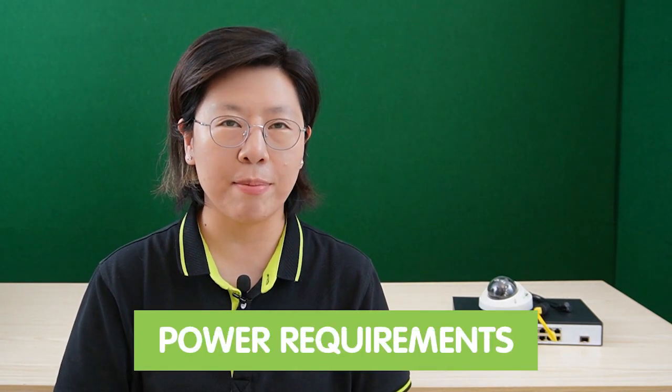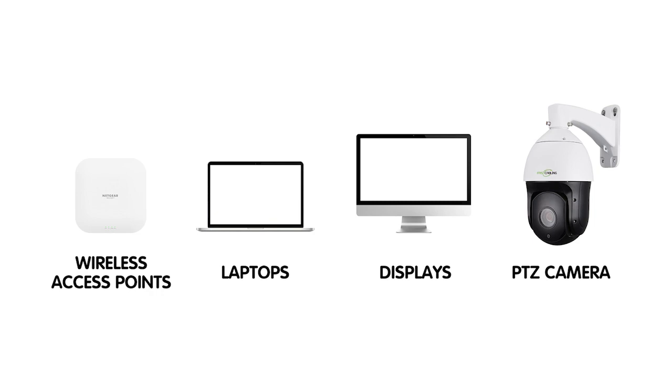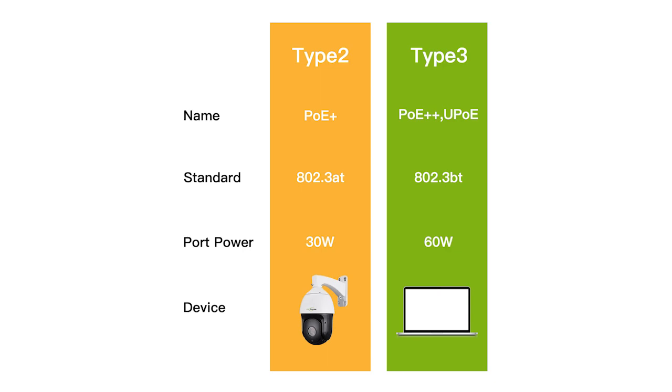PoE technology caters to a wide range of devices, categorized based on their power requirements. Low-power devices like IP cameras, VoIP phones, and sensors typically use PoE for efficient power and data transmission. High-power devices such as wireless access points, displays, and PTZ cameras require a more substantial power supply. Differentiating between PoE, PoE+, and PoE++ is vital in understanding power compatibility. PoE+ delivers higher power than standard PoE, suitable for devices with moderate power needs, while PoE++ provides even more power, accommodating high-power devices, making it versatile for diverse applications.